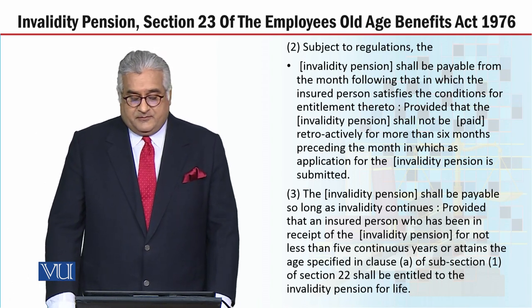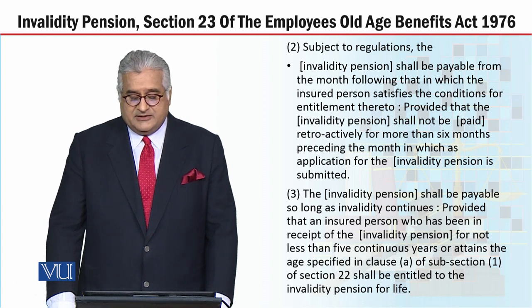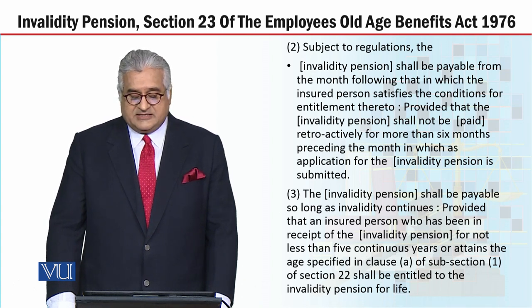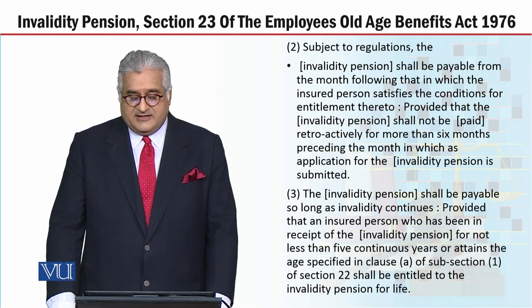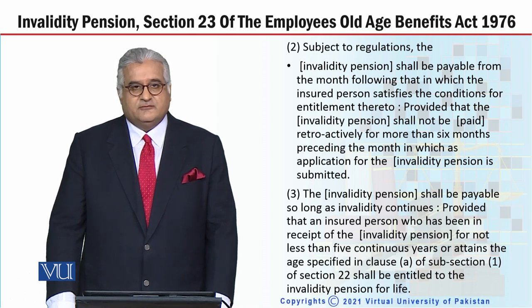Subsection 3. The invalidity pension shall be payable so long as invalidity continues, provided that an insured person who has been in receipt of the invalidity pension for not less than five continuous years, or attains the age specified in Clause A of Subsection 1 of Section 22, shall be entitled to the invalidity pension for life.